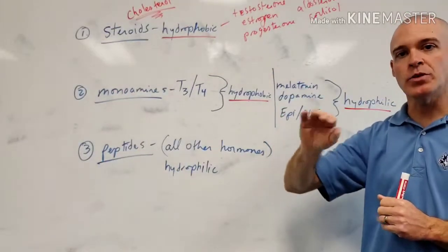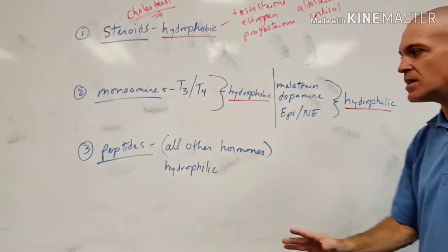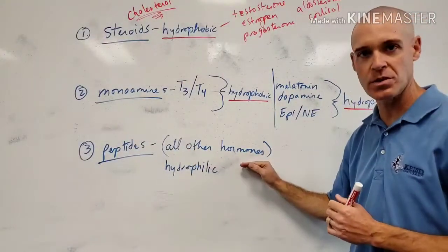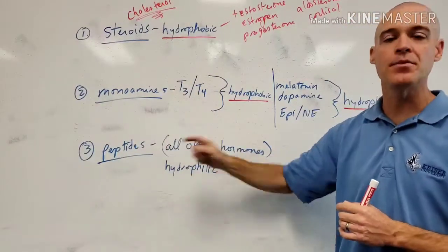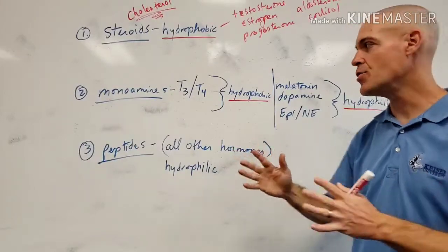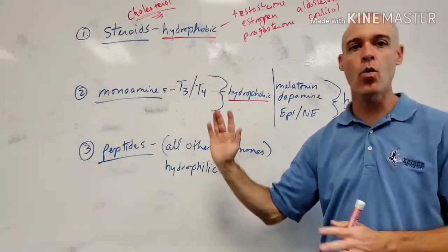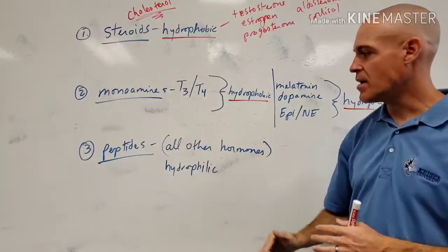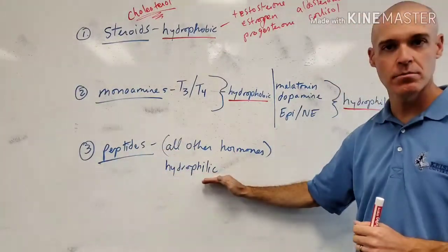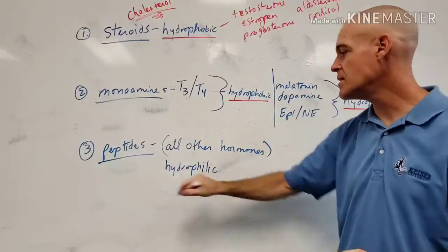Now, that leaves us with the third, which is the peptides, and this is what makes it easy. Peptides have to be all other hormones. If they're not a steroid, they're not a monoamine, they have to be a peptide. So, that kind of makes it easy. You can figure out what any hormone is based on this rundown I've given you here. All peptides are hydrophilic. That also makes it easy.